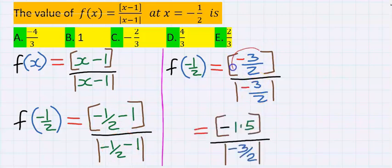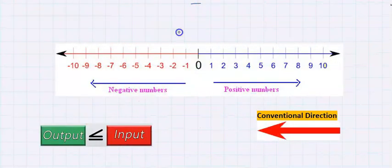Next, minus 3 over 2 is same as minus 1.5. Consider the greatest integer function of minus 1.5. Minus 1.5 is in between minus 1 and minus 2.